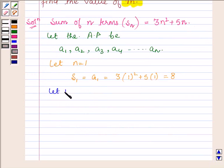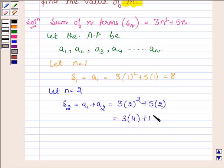Now let n = 2. The sum of first two terms, that is a₁ + a₂, will be equal to 3(2)² + 5(2), which is equal to 3(4) + 10, which is equal to 22.